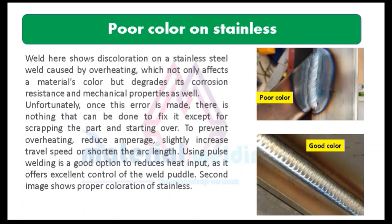Number 10 is poor color on stainless steel. Discoloration on a stainless steel weld is caused by overheating, which not only affects the material's color but degrades its corrosion resistance and mechanical properties as well. Unfortunately, once this error is made, there is nothing that can be done to fix it except scrapping the part and starting over. To prevent overheating, reduce amperage, slightly increase travel speed, or shorten the arc length. Using pulse welding is a good option to reduce heat input, as it offers excellent control of the weld puddle. The second image shows the proper coloration of stainless steel.